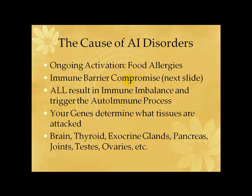There's even more — ongoing activation like food allergies. We'll get more into depth on immune barrier compromise on the next slide, but all of these things result in an immune imbalance and can trigger the autoimmune process. Your genes, your parents, determine what tissues are attacked. But without those causes occurring, those genes won't get triggered to activate.